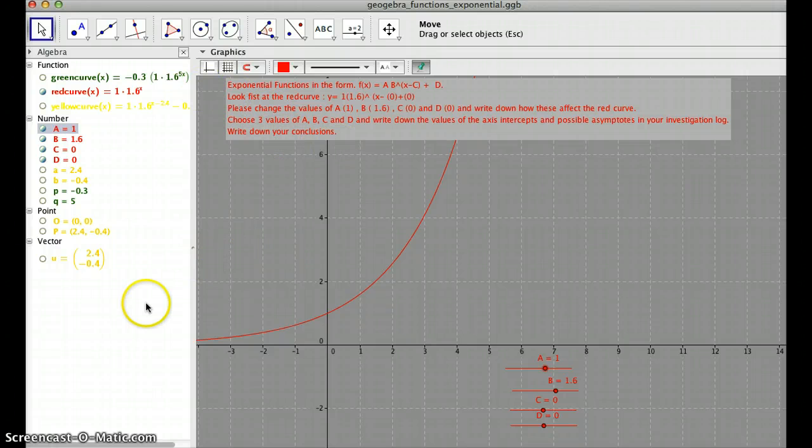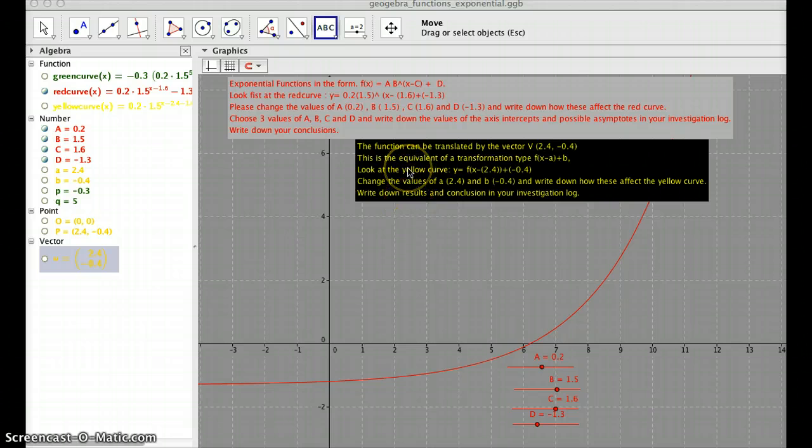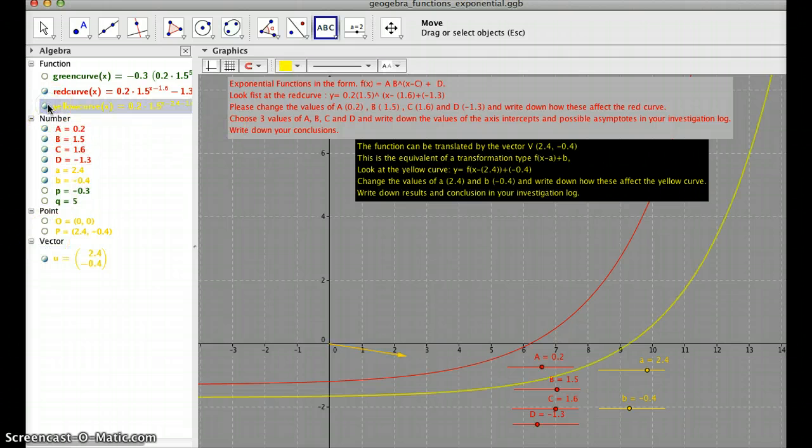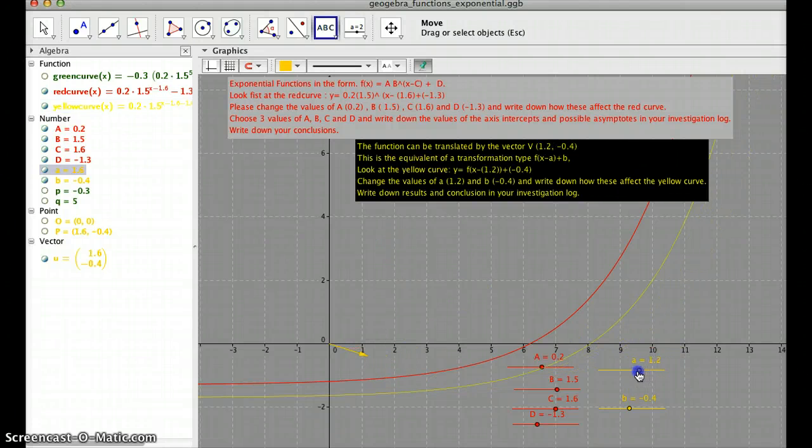Now, we can also have other investigations. In the yellow part, we have a vector b that has coordinates a and b. We can see here the vector. And what we're doing is we are translating the whole curve by these vectors. So this is easy now. We change the value of a.